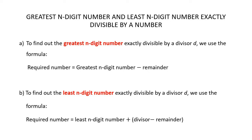In many problems based on this topic, you are asked to find the greatest n-digit number or the least n-digit number exactly divisible by a number. To do this, you have to remember these two formulae. The first formula will help you find the greatest n-digit number exactly divisible by a divisor D. The second formula will help you find the least n-digit number exactly divisible by a divisor D. To find the greatest n-digit number, use: required number = greatest n-digit number minus remainder.